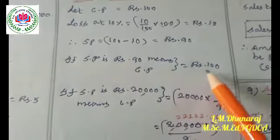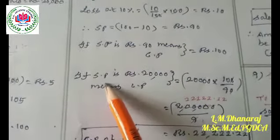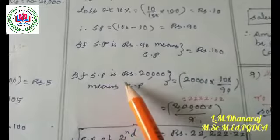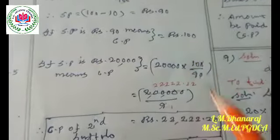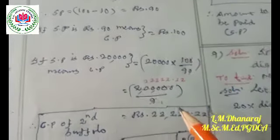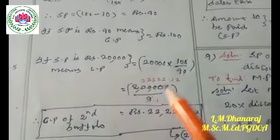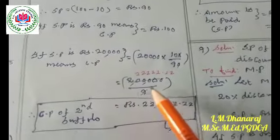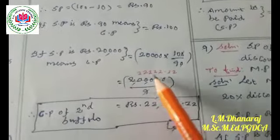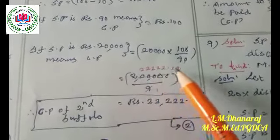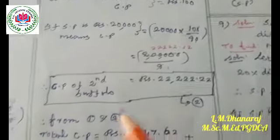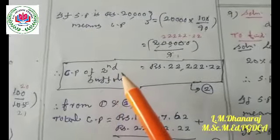If the selling price is rupees 90, the cost price is rupees 100. If the selling price of the second buffalo is rupees 20,000, then the cost price is equal to 20,000 into 100 divided by 90. Cancelling one zero from each, it becomes 2 lakhs divided by 9, giving rupees 22,222.22 paise.